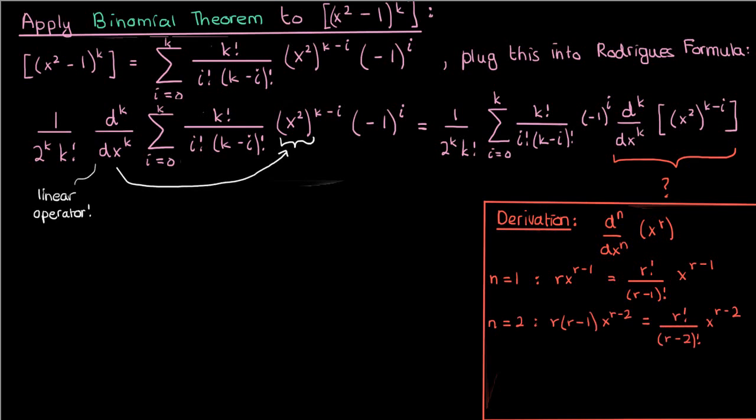Notice the pattern here? If you did then you'll see that the nth derivative of x to the power r is just r factorial over r minus n factorial times x to the power r minus n.